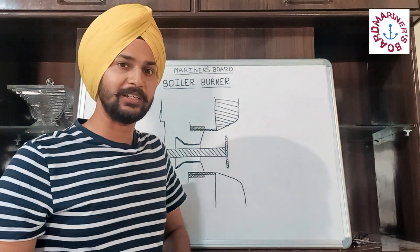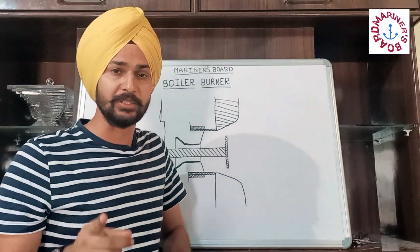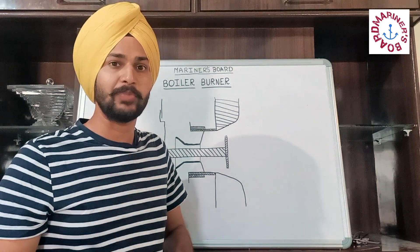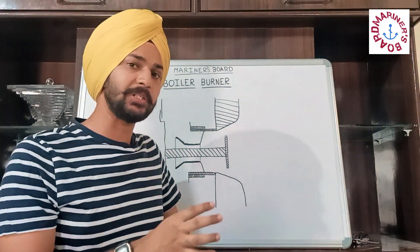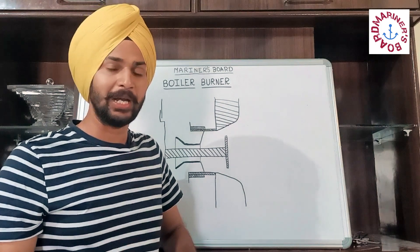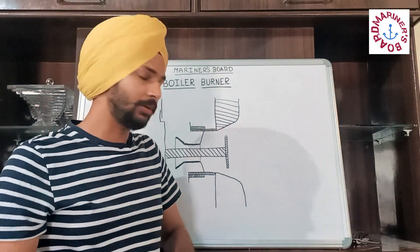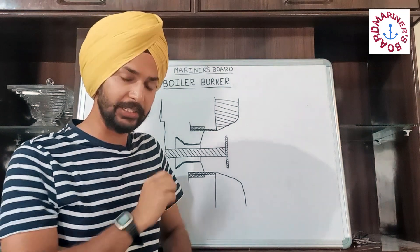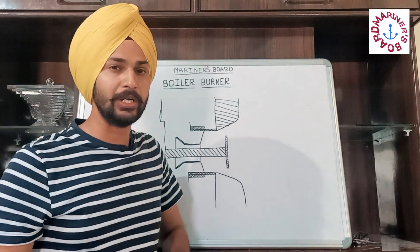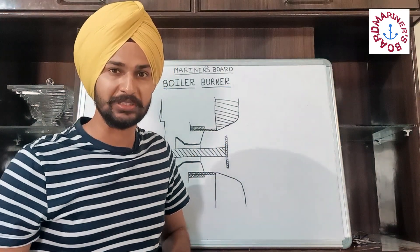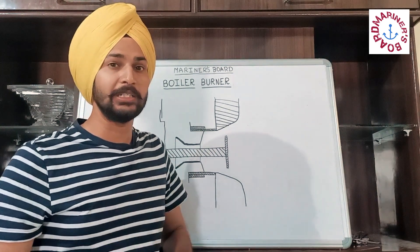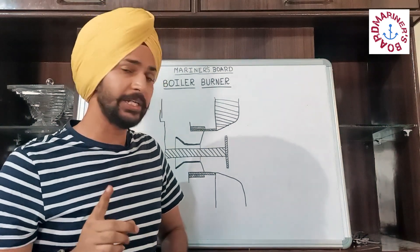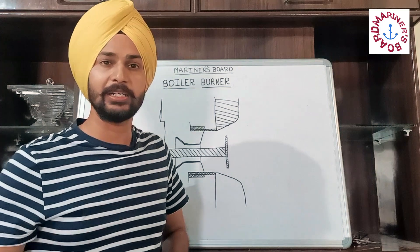The second reason is that when you are heating up to its ignition temperature, the fuel starts to give out vapors. These vapors are higher in volume and get trapped inside the pipelines of the fuel line. As a result, the fuel faces difficulty flowing within the line and the flow rate of fuel reaching the burner tip reduces. Because of these two reasons, we heat the fuel inside the heater 20 degrees less than the ignition temperature.